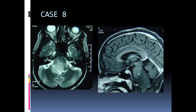This is a pediatric brain MRI showing an exophytic T2 hyperintense lesion arising from the pons causing displacement of the fourth ventricle. On the T1 sagittal contrast-enhanced sequence we see there is no enhancement. So this is a brainstem glioma.